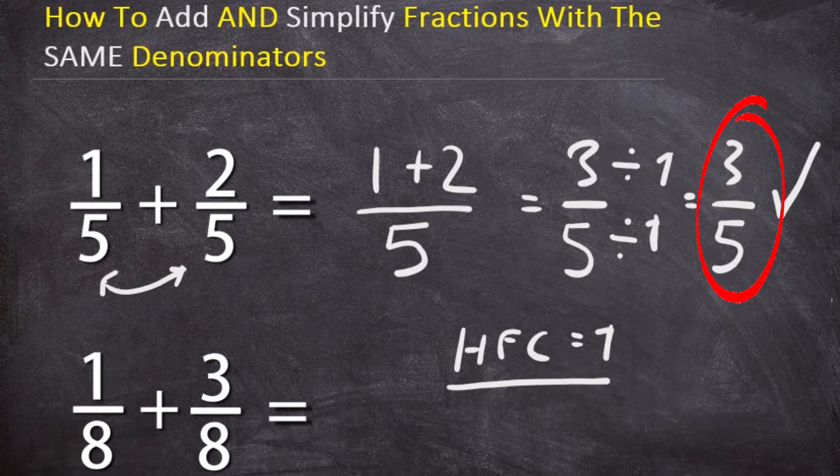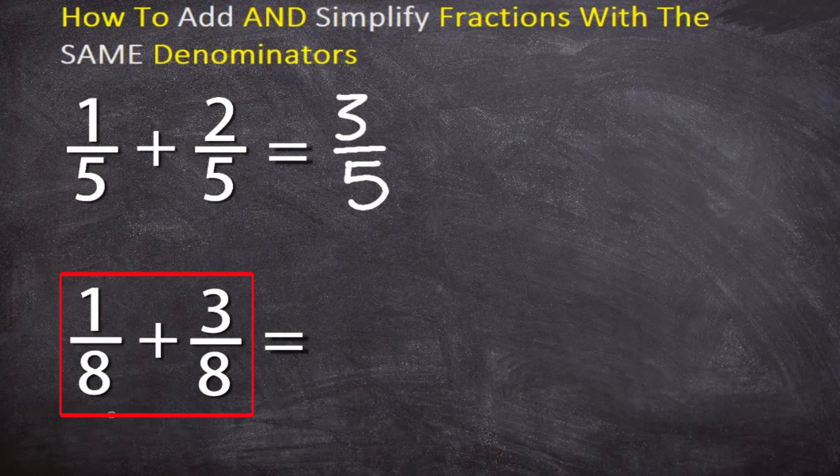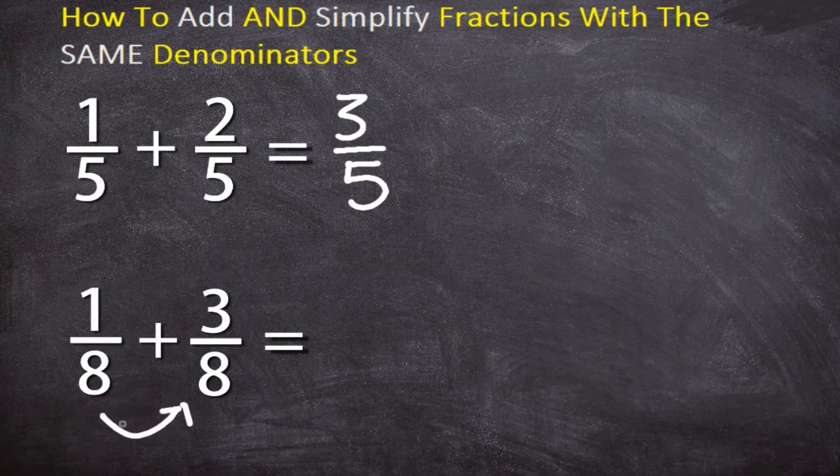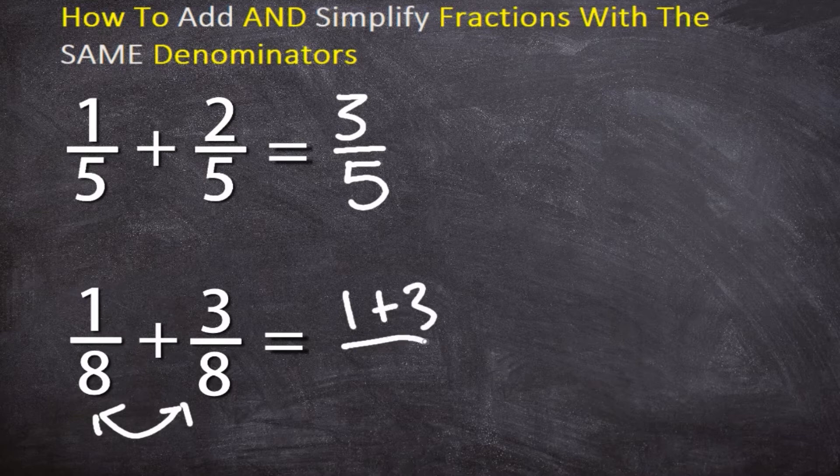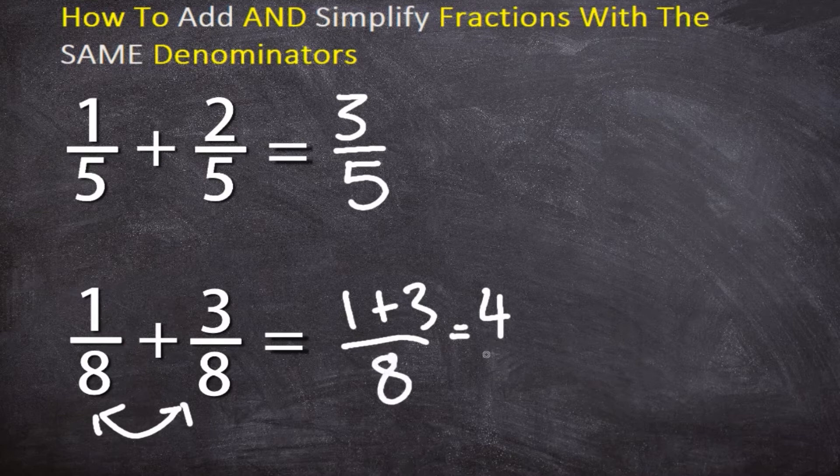Let's take one more example: one over eight plus three over eight. You can immediately see that both these fractions have common denominators. Eight is common to both fractions, so all we need to do is the first step which is add the numerators. That's one plus three which gives us four, and keep the denominator eight. So then that gives us the fraction four over eight. So one over eight plus three over eight equals four over eight. Easy wasn't it?